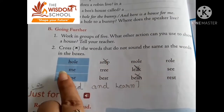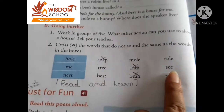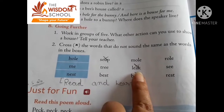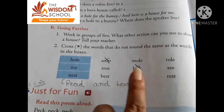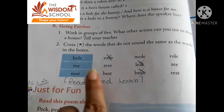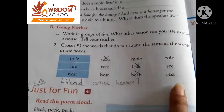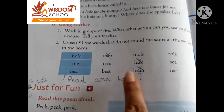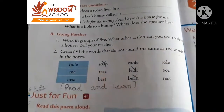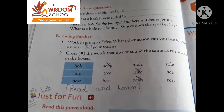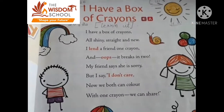Me, Tree, League, Sea — whose sound is different? League. So we have to cross this word. Nest, Best, Bean, Rest — whose sound is different? Bean. So we have to cross the bean.